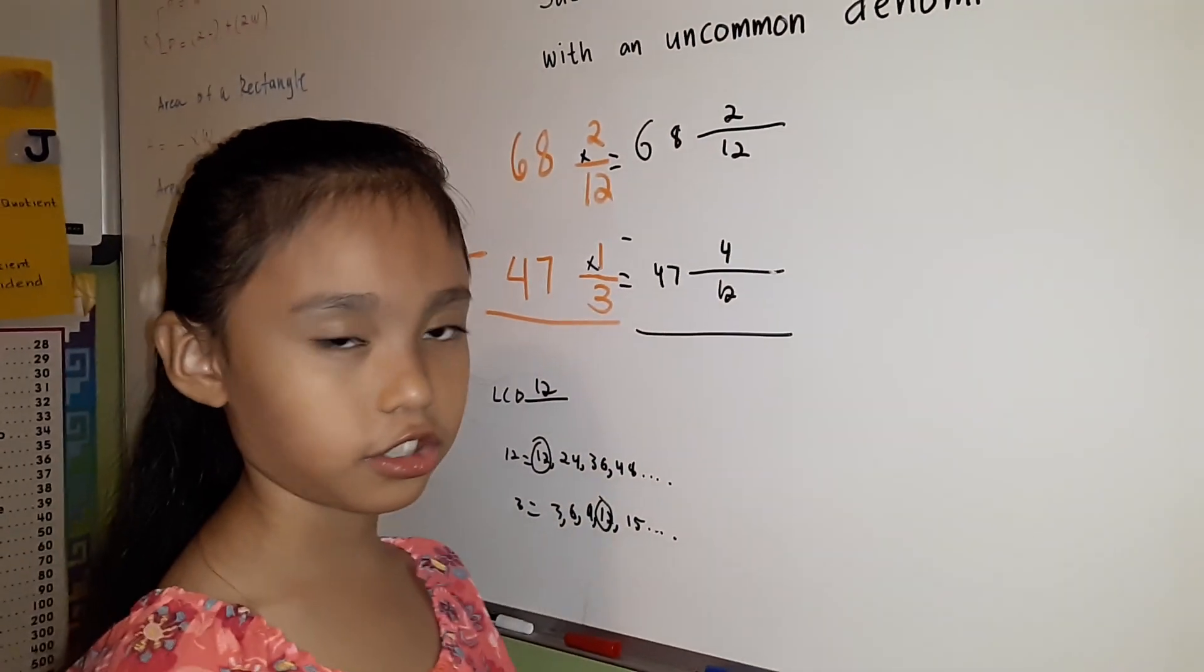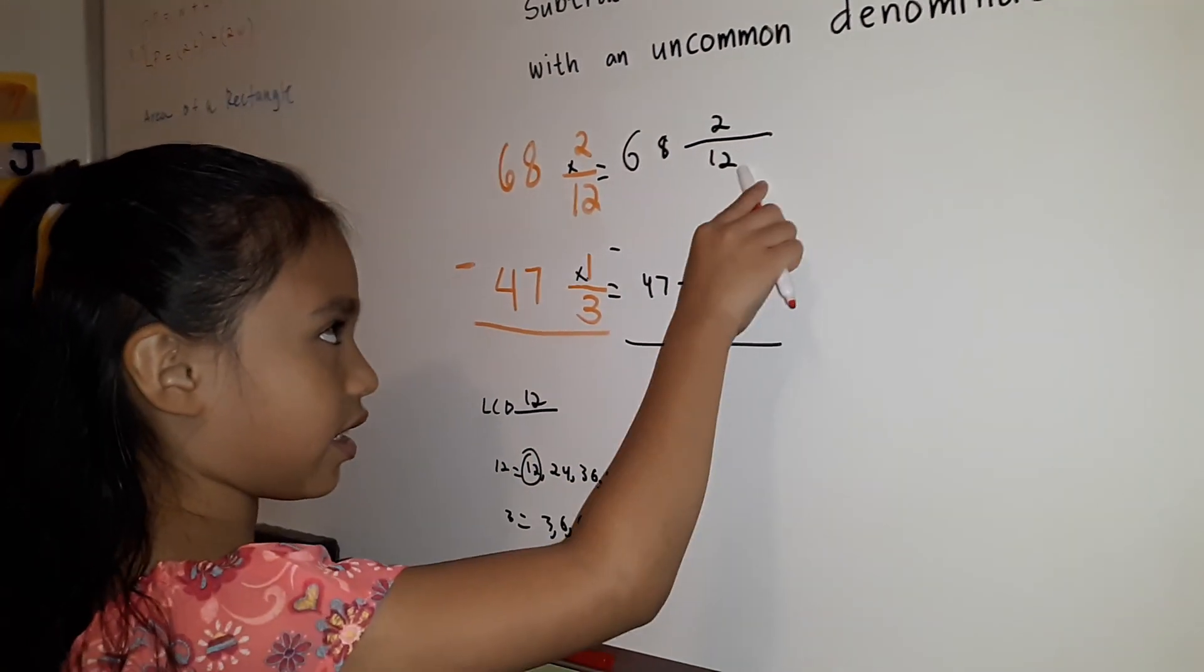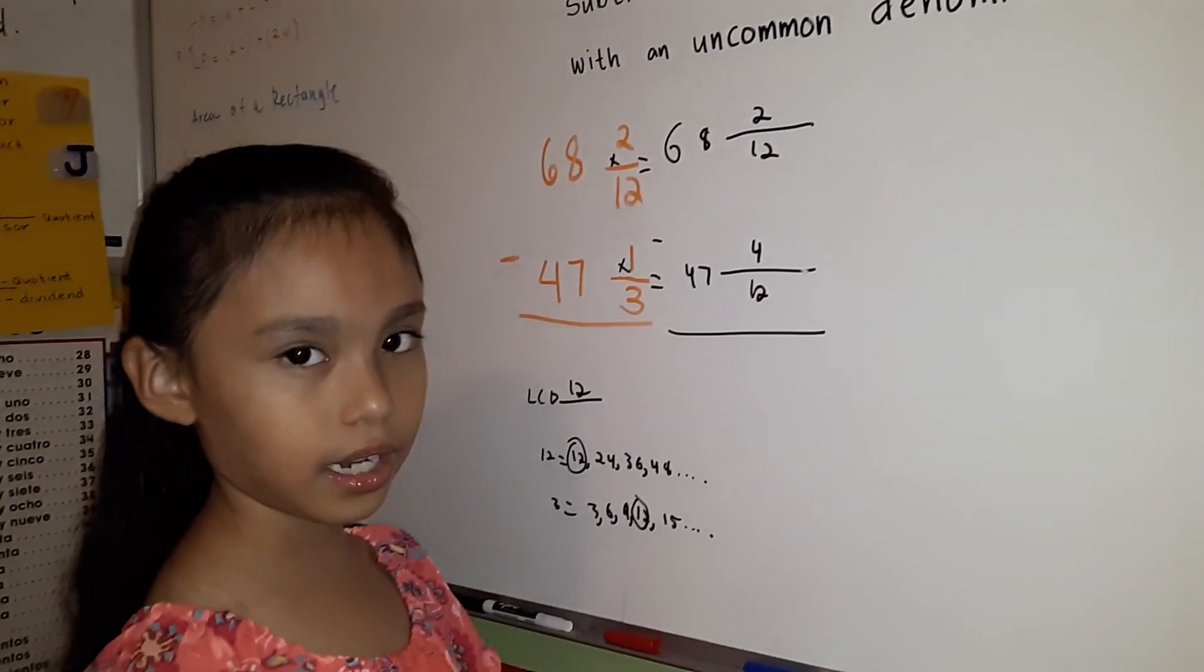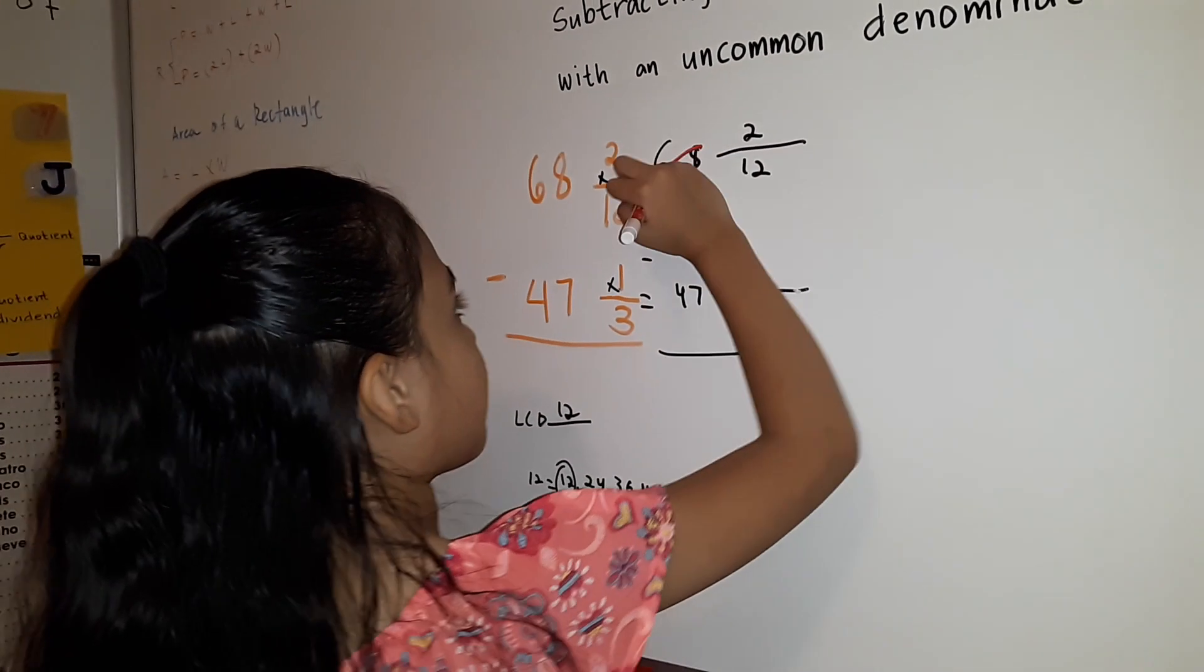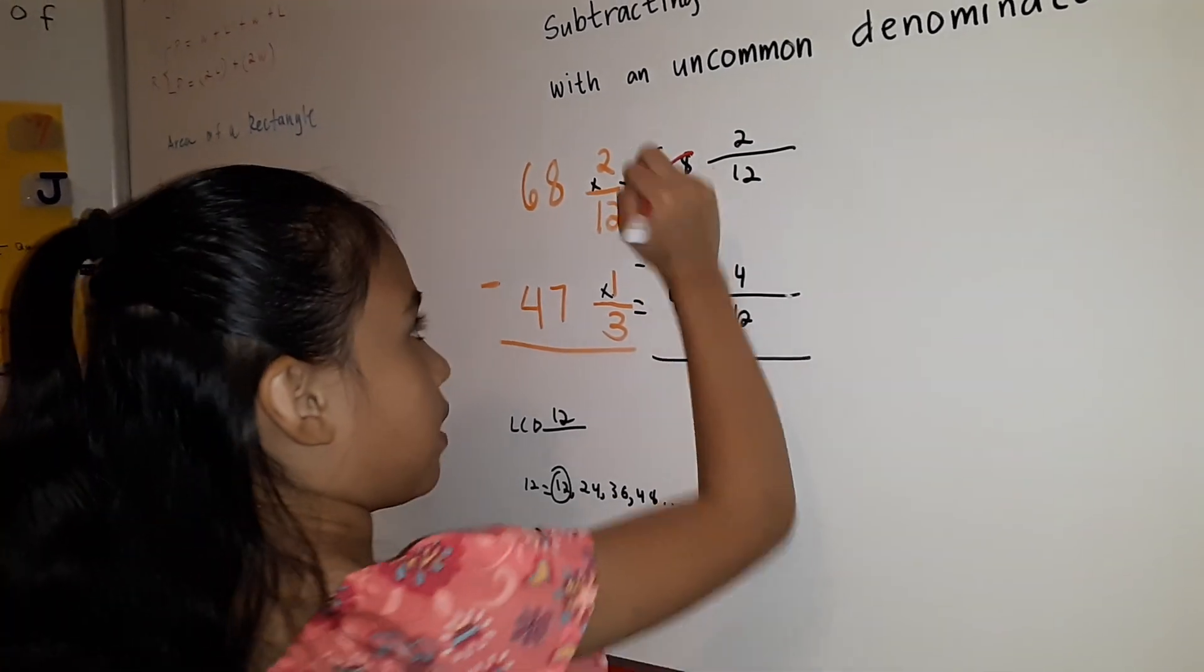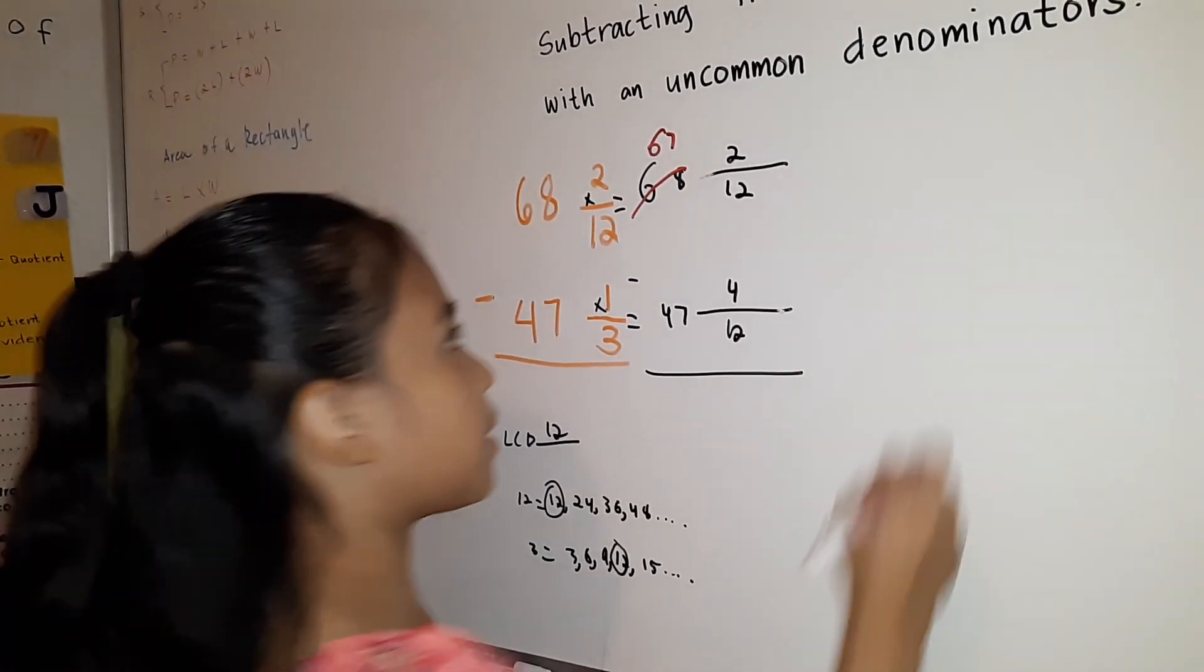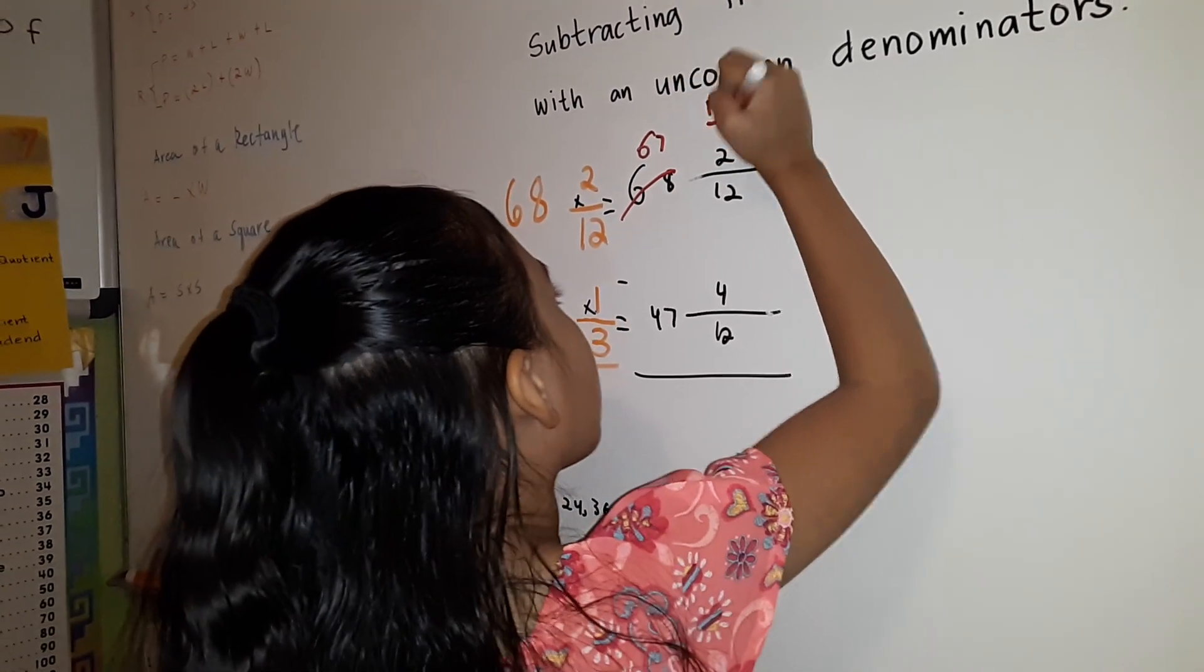We're going to subtract the fractions. You can only subtract the numerator and you can bring down the denominator. 2 minus 4 equals cannot be. I'll borrow from 68. 68 becomes 67. The one that we borrowed from 68 becomes 12/12.